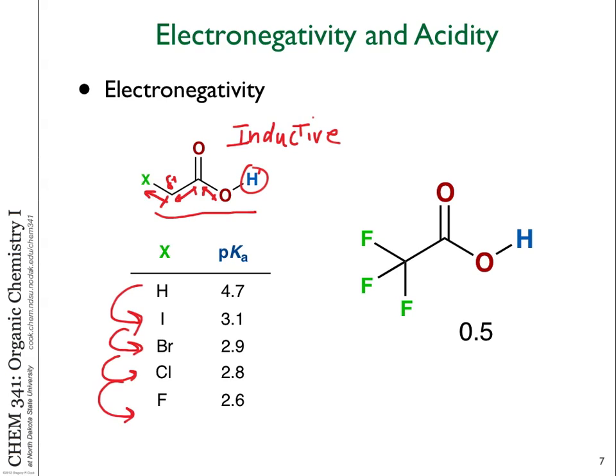If you add more electronegative atoms, the effect is additive. All those fluorines withdraw electron density from the sigma bonds closer to them, polarizing those bonds and affecting acidity. Obviously a molecule with three fluorines will be more greatly affected than one with only one electronegative substituent. The effect would also be smaller if there were more carbons in between.